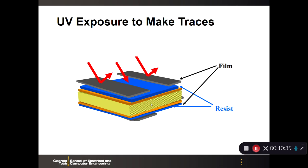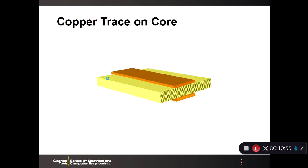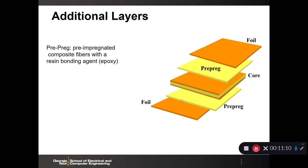Just like manufacturing integrated circuits, you apply a photo resist to the top and bottom, use a mask and expose the system to ultraviolet light, which etches away the photo resist. You are left with the copper trace on the core — two traces, one on the top of the laminate and one on the bottom. This was the original core, and now we've created two traces.